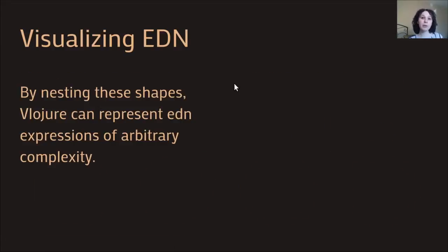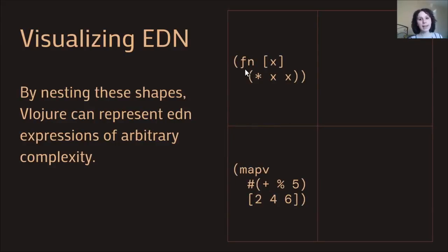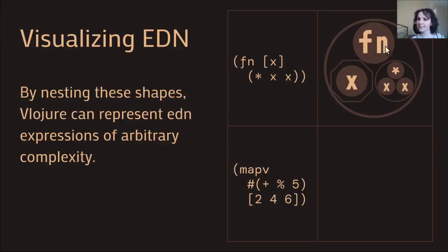The real power of Vlojure comes in that you can nest these shapes together inside one another, and by doing this you can represent any EDN expression, including ClojureScript code. Here we have a little function definition — a function of one argument that multiplies it by itself. In Vlojure, that looks like this: we have fn up here declaring it's a function, the argument vector here, and finally the function body where the argument gets multiplied by itself.